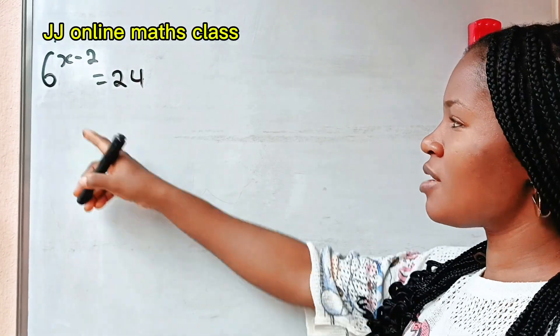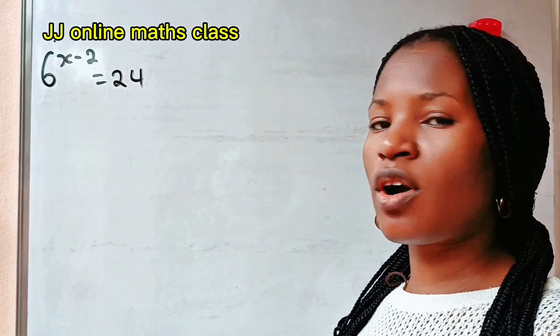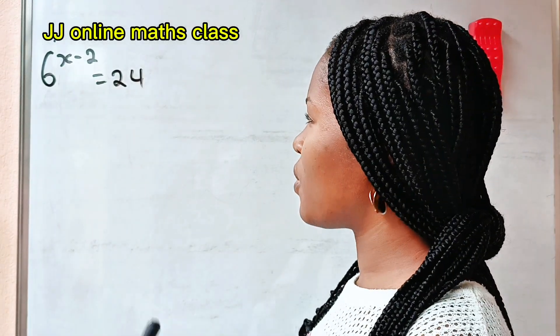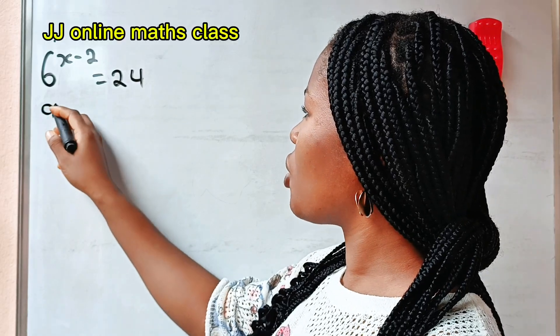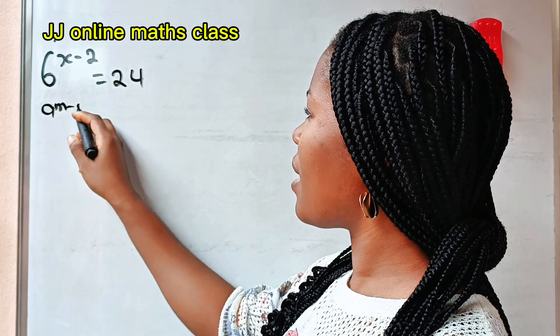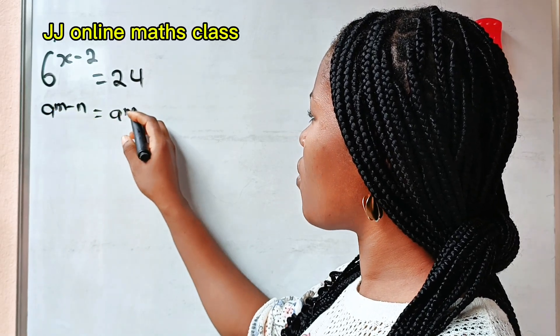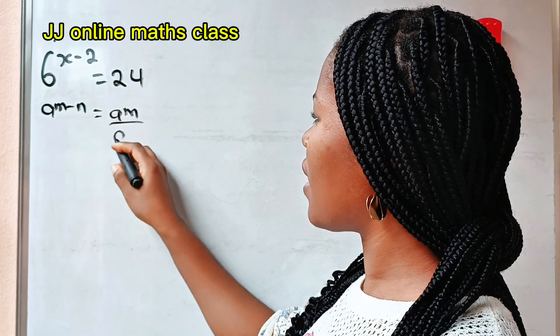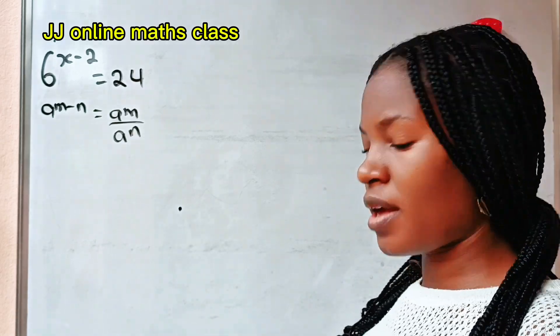Hi, amazing friends. Let's solve for x. First, recall the law of exponents that states that a to the power of m minus n is equal to a to the power of m divided by a to the power of n.